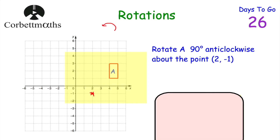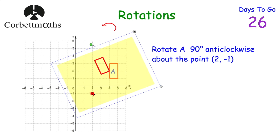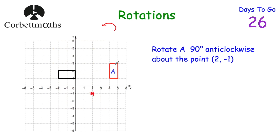Once we've traced over the centre of rotation and the shape, I'd put my pencil on the centre of rotation and rotate the tracing paper 90 degrees anti-clockwise. The tracing paper goes from landscape to portrait as it rotates. The centre of rotation stays in place and we can see where the rectangle moves to. Then push down on the tracing paper to leave a light indentation on the page beneath, and draw that rectangle. So we've rotated rectangle A 90 degrees anti-clockwise about the point (2, -1).